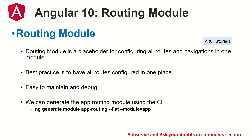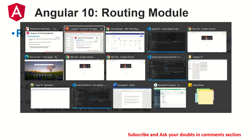So how do we generate it? We can generate a basic app routing module using this command: `ng generate module app-routing --flat --module=app`. When you run that, you are telling Angular to generate a new module named app-routing. The `--flat` flag means it will not have any folder hierarchy, and `--module=app` tells it which module it will work with.